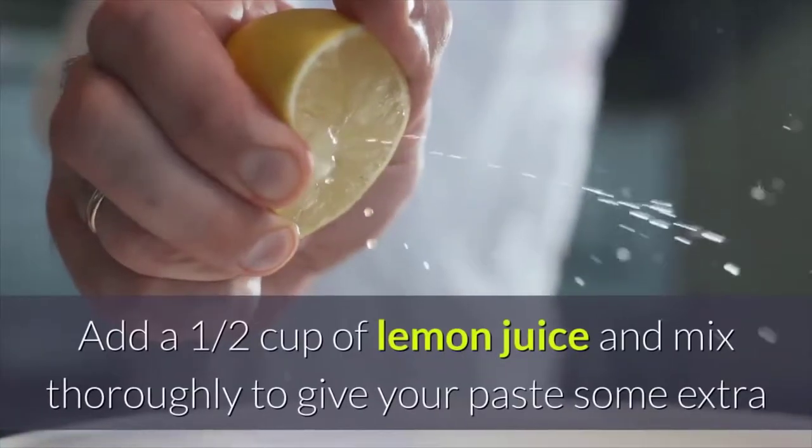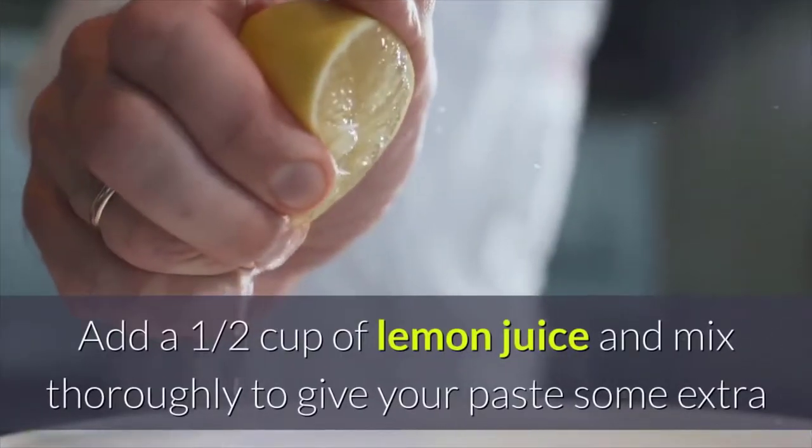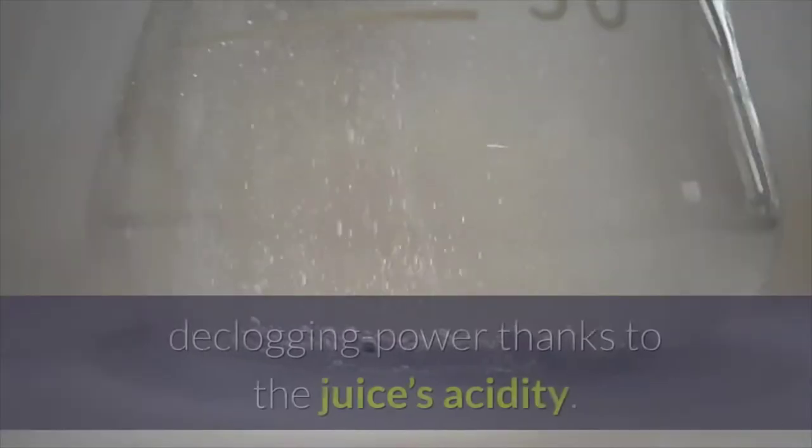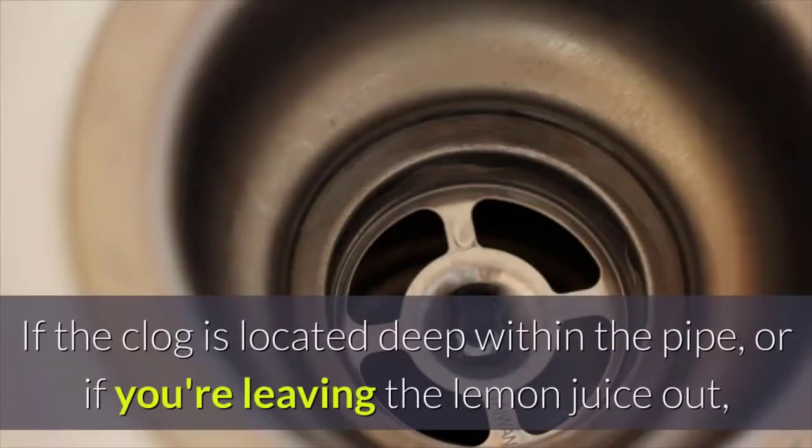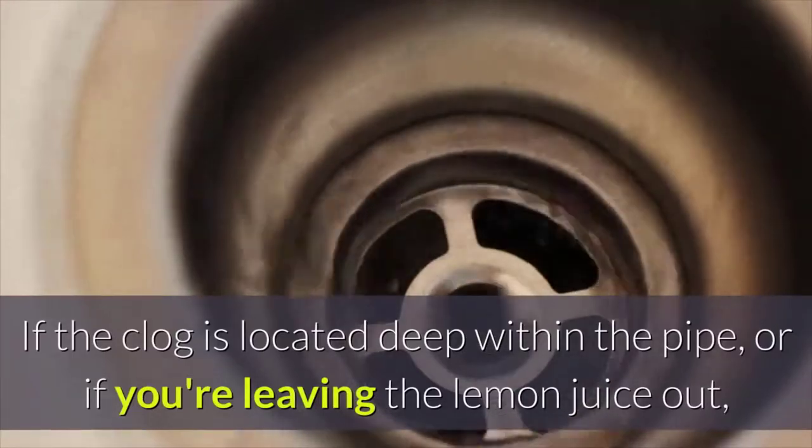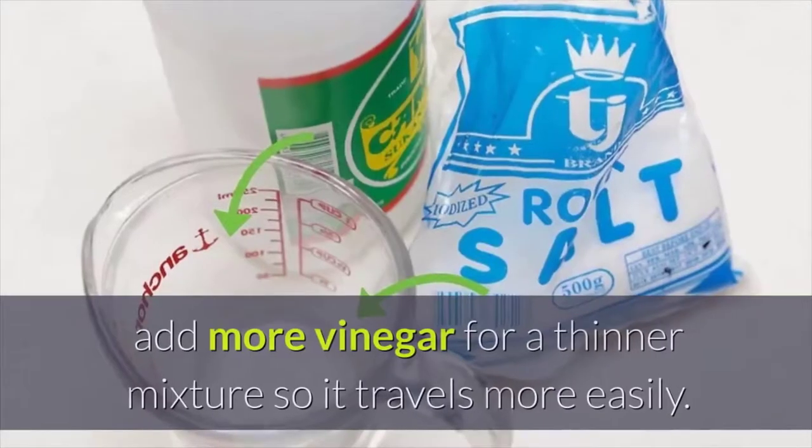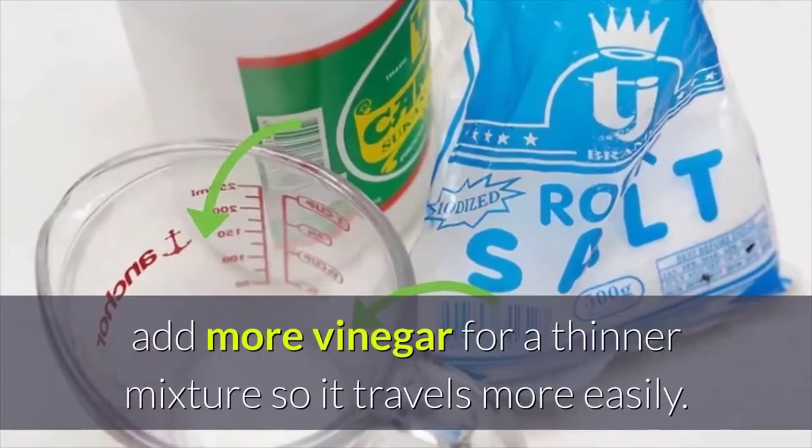Add a 1⁄2 cup of lemon juice and mix thoroughly to give your paste some extra declogging power thanks to the juice's acidity. If the clog is located deep within the pipe, or if you're leaving the lemon juice out, add more vinegar for a thinner mixture so it travels more easily.